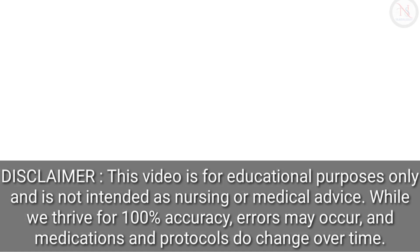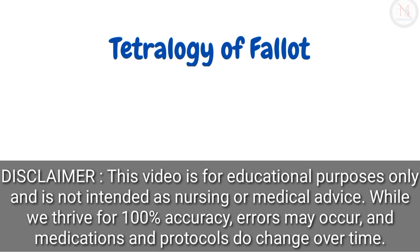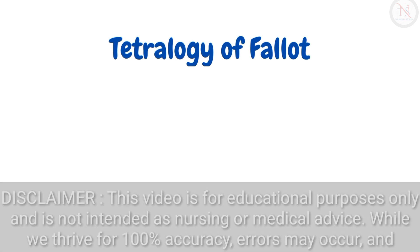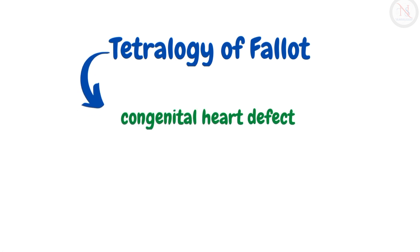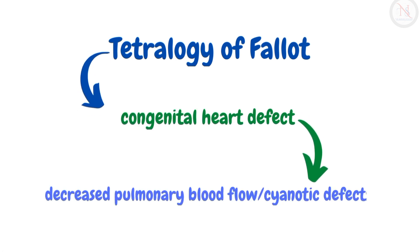In this video we will be going through the congenital heart defect known as tetralogy of Fallot. This comes under the congenital heart defects with decreased pulmonary blood flow, or cyanotic defects. Before we look into tetralogy of Fallot, we first need to understand basic heart anatomy.